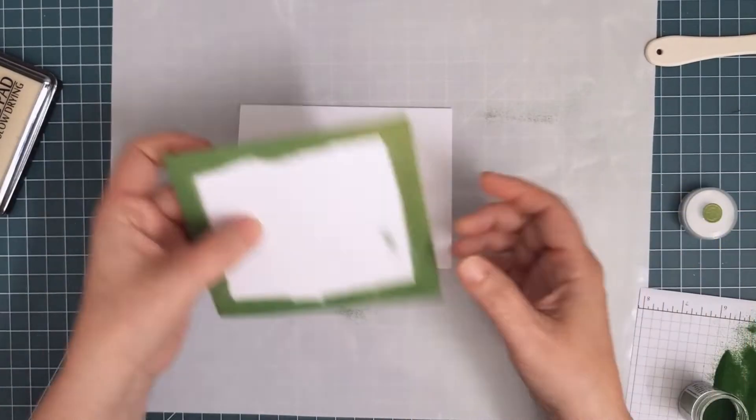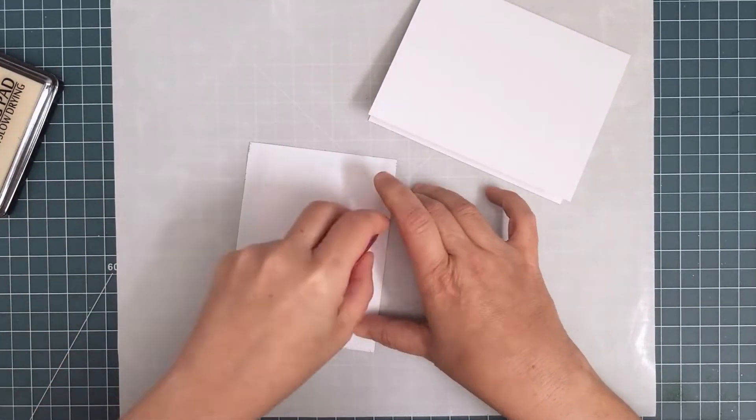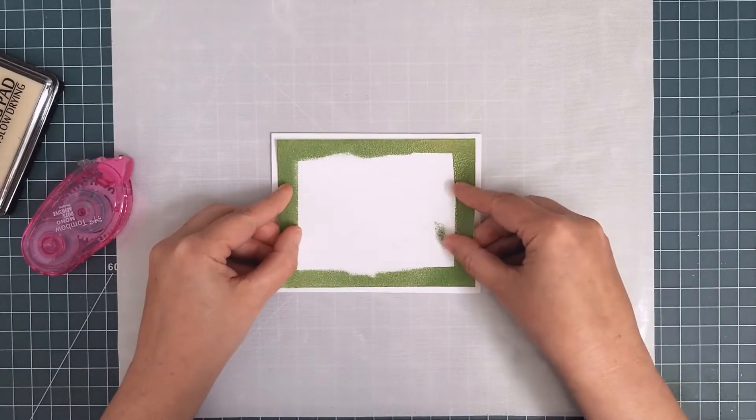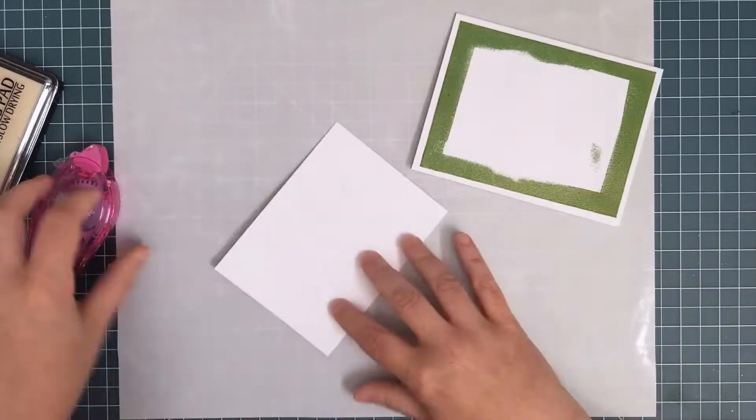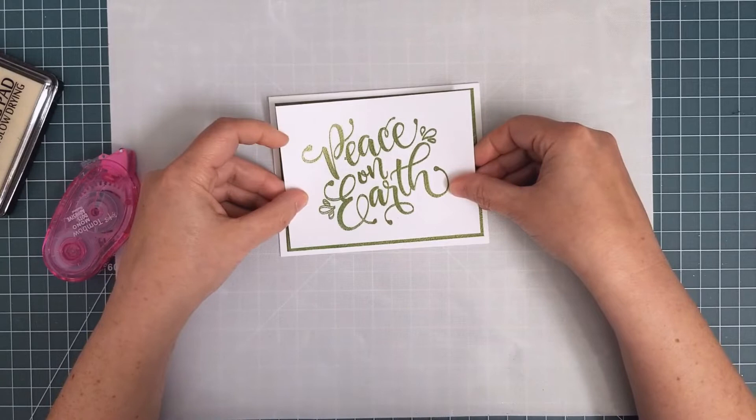Then it was time to assemble. The panels are not very warped but I used a lot of adhesive just to be sure that everything would lie flat. I put the mat down first, centering it carefully, and then I added the sentiment panel. See it all matches perfectly.